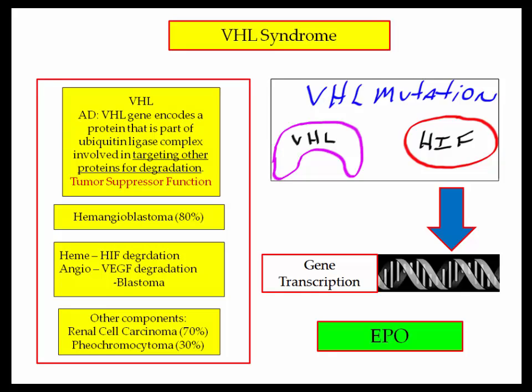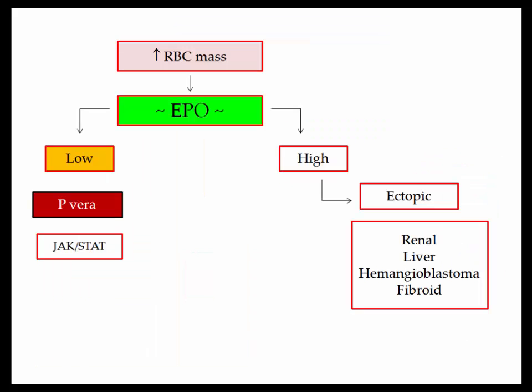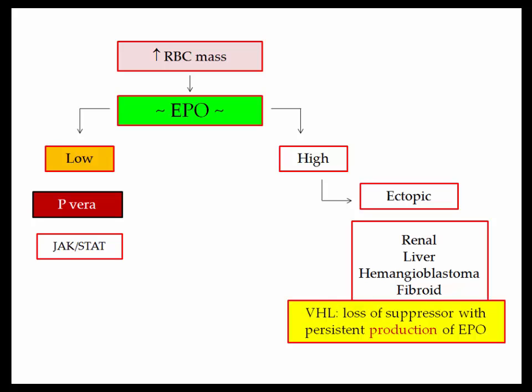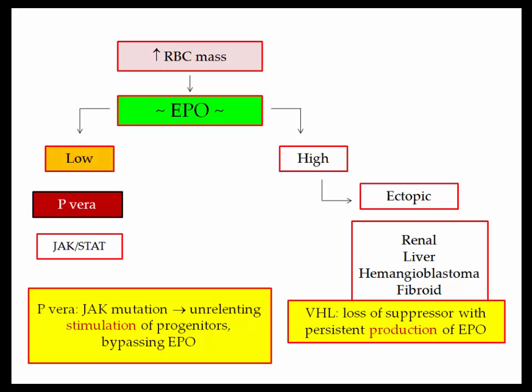The other components of VHL include renal cell carcinoma, described in as many as 70% of those patients — for which annual imaging studies are recommended — and pheochromocytoma, for which annual screening for metanephrines is recommended. In VHL, we have loss of suppressor with persistent production of erythropoietin due to increased HIF levels: high erythropoietin stimulates erythrocytosis in the setting of hemangioblastoma. In polycythemia vera, we have a JAK mutation leading to unrelenting stimulation of erythroid progenitors, bypassing erythropoietin entirely.